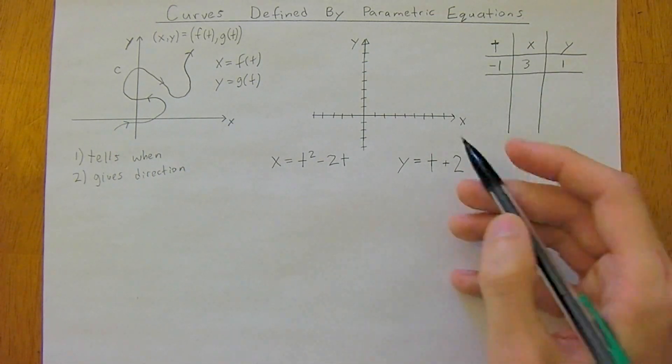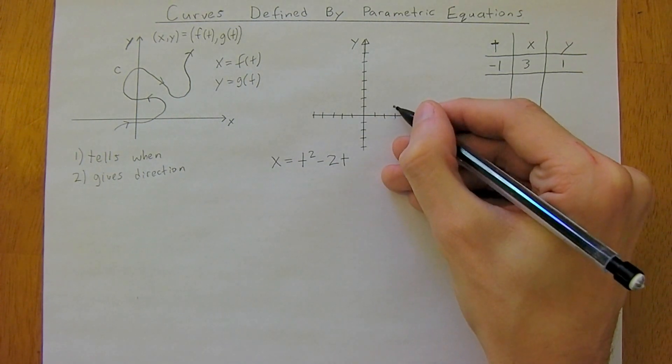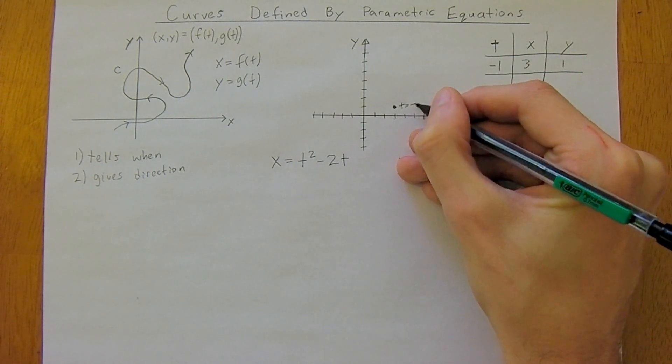Let's find that now. x is 3, so 1, 2, 3. Y is 1, up here. That is at t equals negative 1.